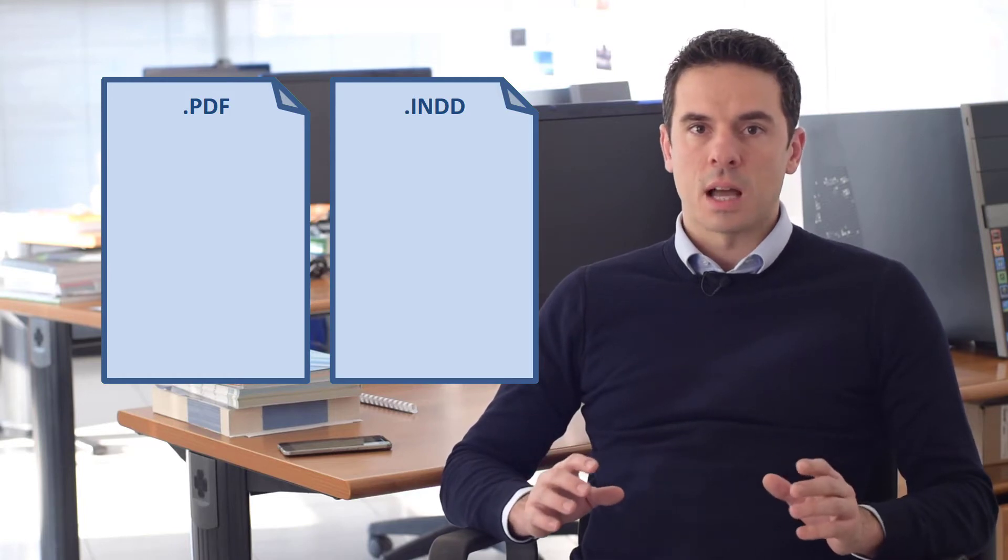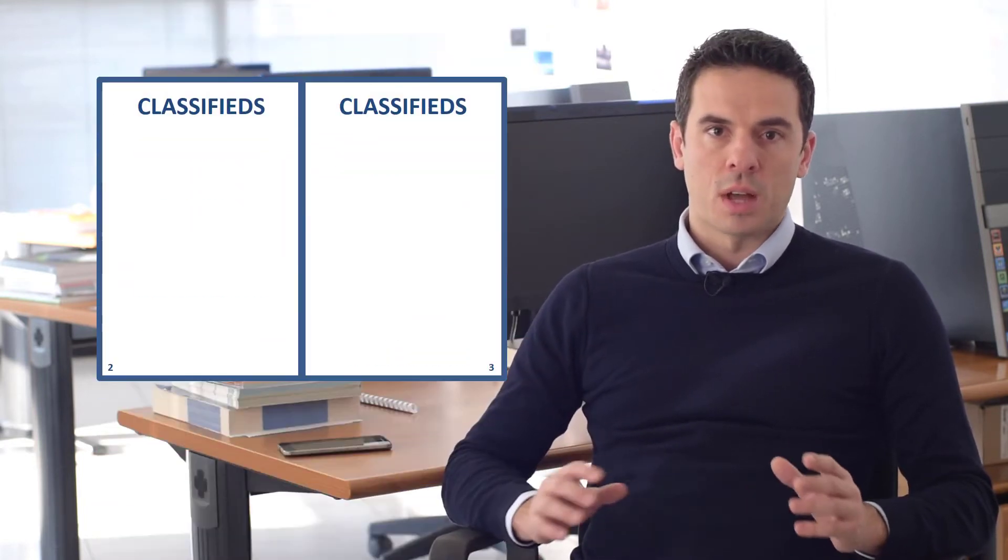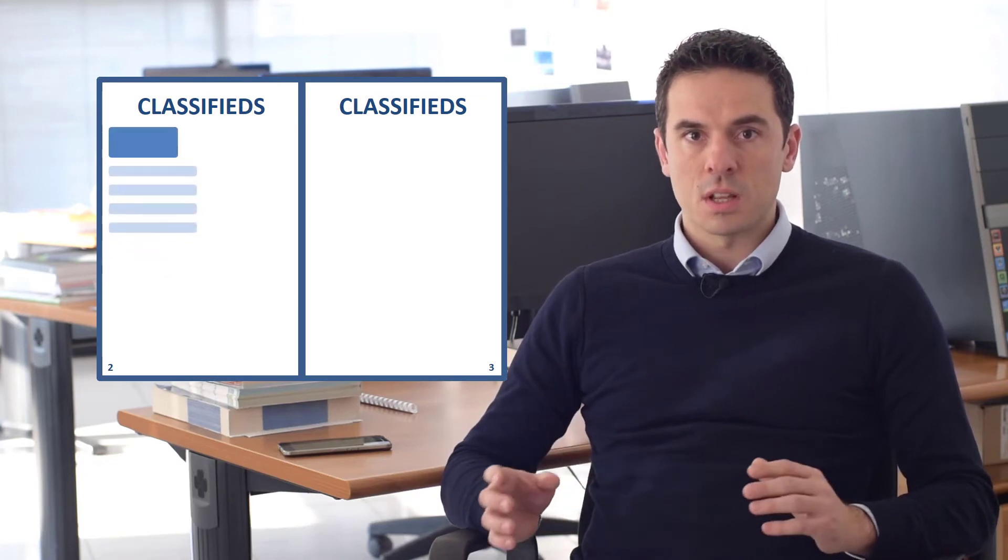Usually, classified advertisements or business directories have two types of entries: the normal text entries and the display ads.